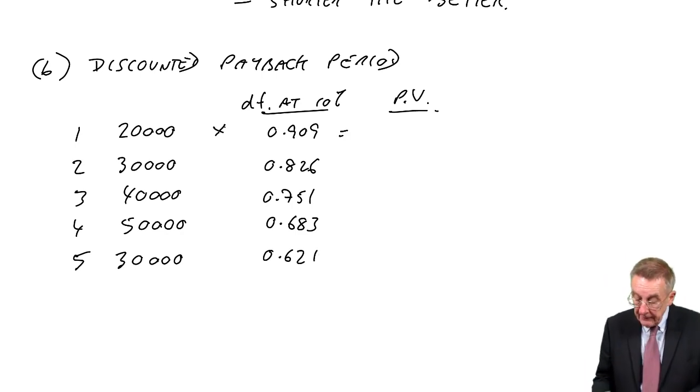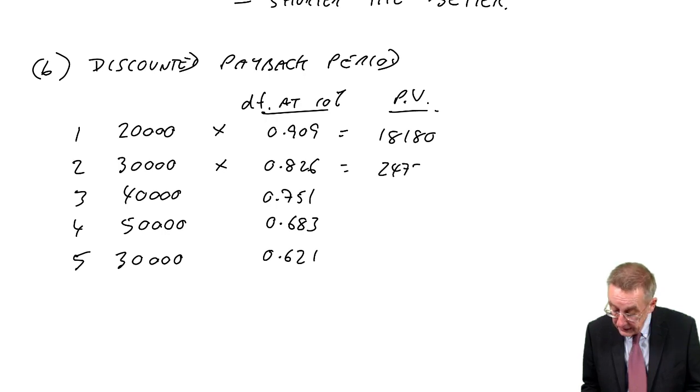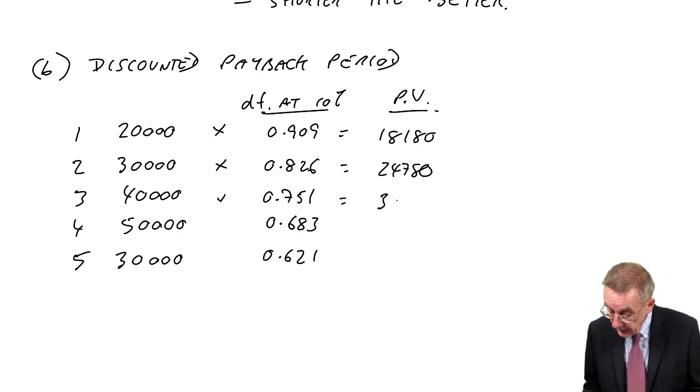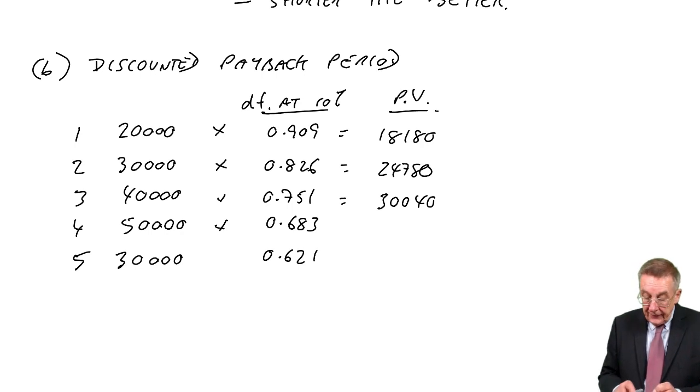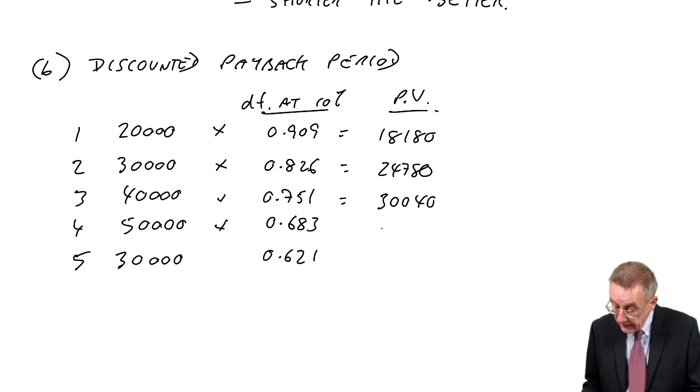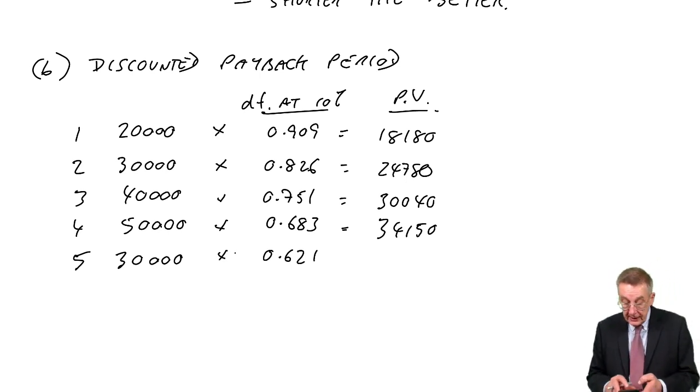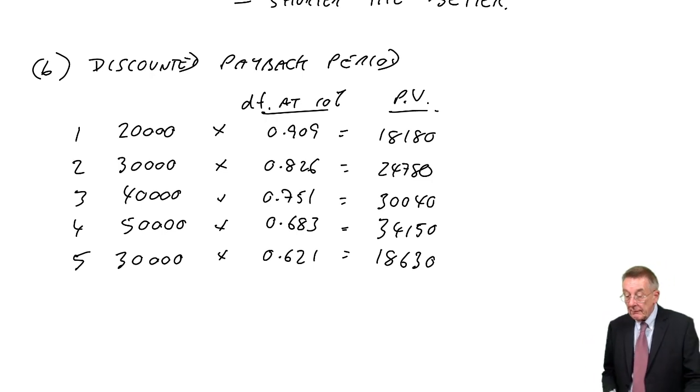So the present values: £20,000 times 0.909 is £18,180; £30,000 times 0.826 is £24,780; £40,000 times 0.751 is £30,040; £50,000 times 0.683 is £34,150; and finally £30,000 times 0.621 is £18,630. We do exactly the same as before but on these present values, the discounted amounts.